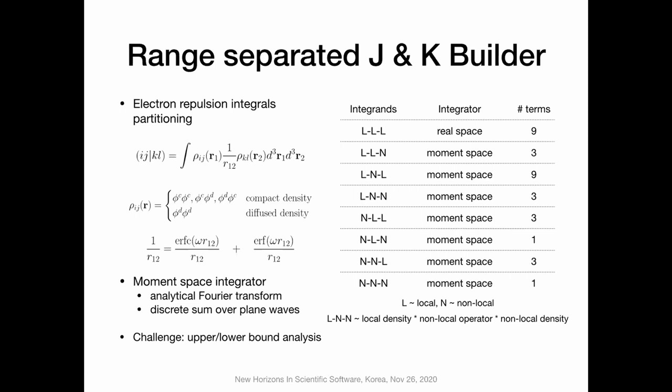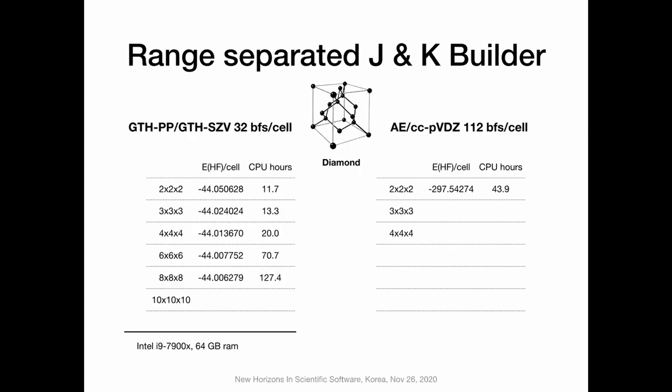It involves at least the range parameter, the parameter for momentum space cutoff, and the value of omega to give the proper choice of range separation for the Coulomb operator. Anyway, it is done right now and here are some preliminary results. I list a diamond crystal — the primitive cell is a cubic cell with eight carbon atoms. In this calculation I tried a regular PBC setup using pseudo-potential and a small basis set called GTH-SZV (single zeta valence), and also all-electron calculations with cc-pVDZ basis.